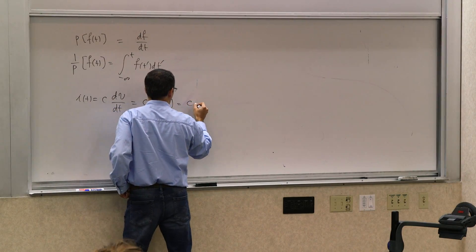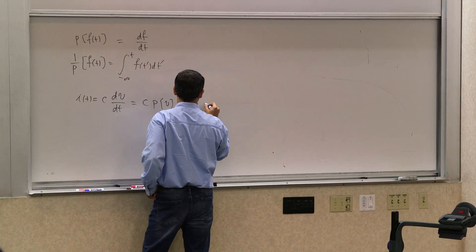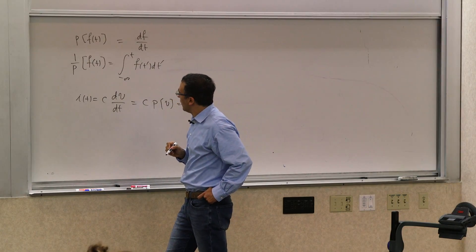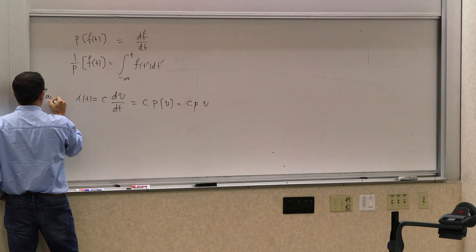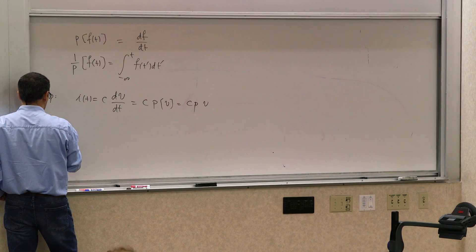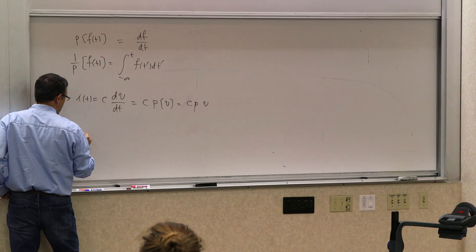Or in a more compact form cp(v). Or similarly, when you had an inductor, in an inductor, for example, we know that v(t) is L di/dt.